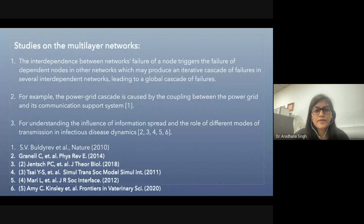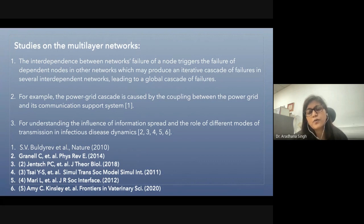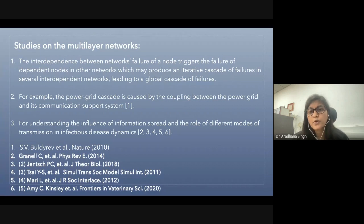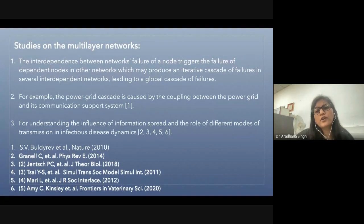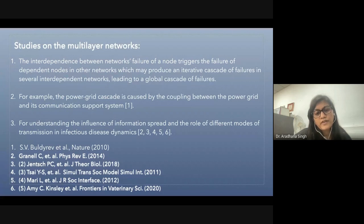The study of multilayer networks is very important because the interdependence between networks means that failure of a node can trigger the failure of dependent nodes in other networks, producing an iterative cascade of failures in several interdependent networks leading to a global cascade. This is seen in the power grid, where cascades are usually caused by the coupling between the power grid and its communication support system, and is also important for understanding the influence of information spread and the role of different modes of transmission in infectious disease dynamics.